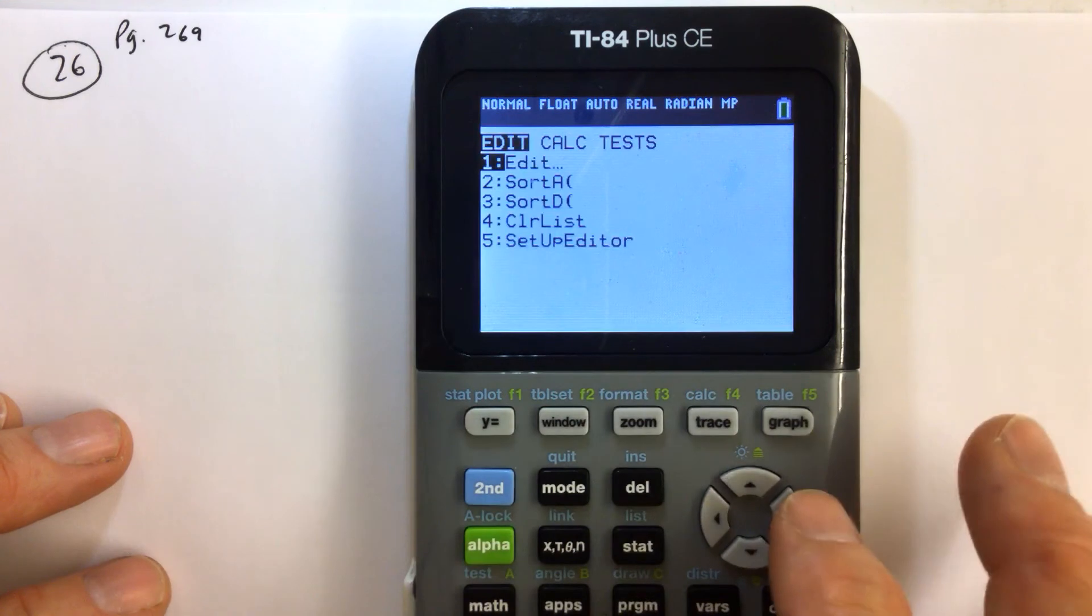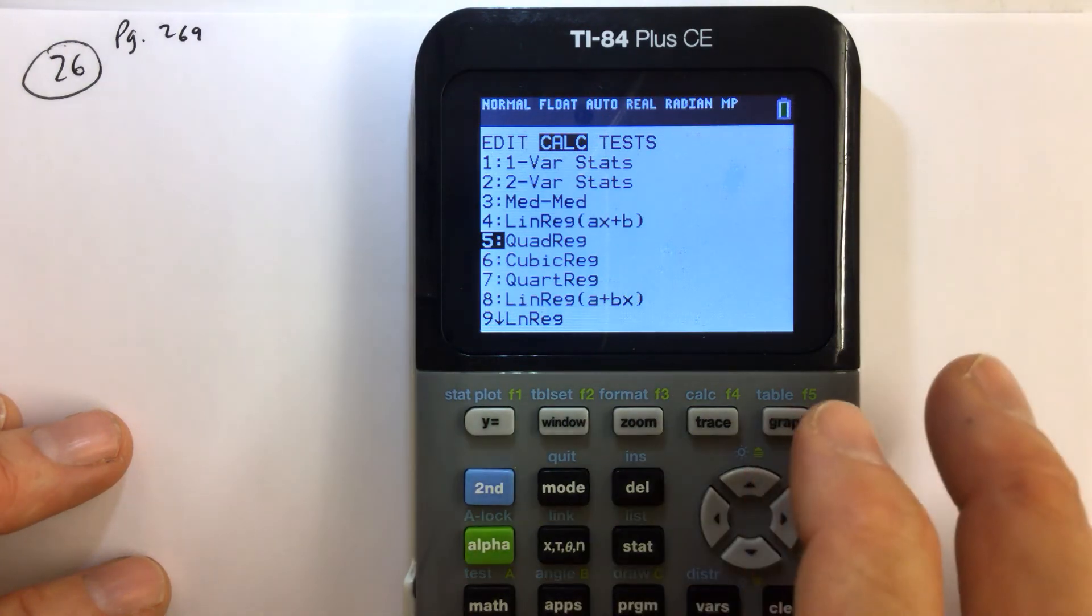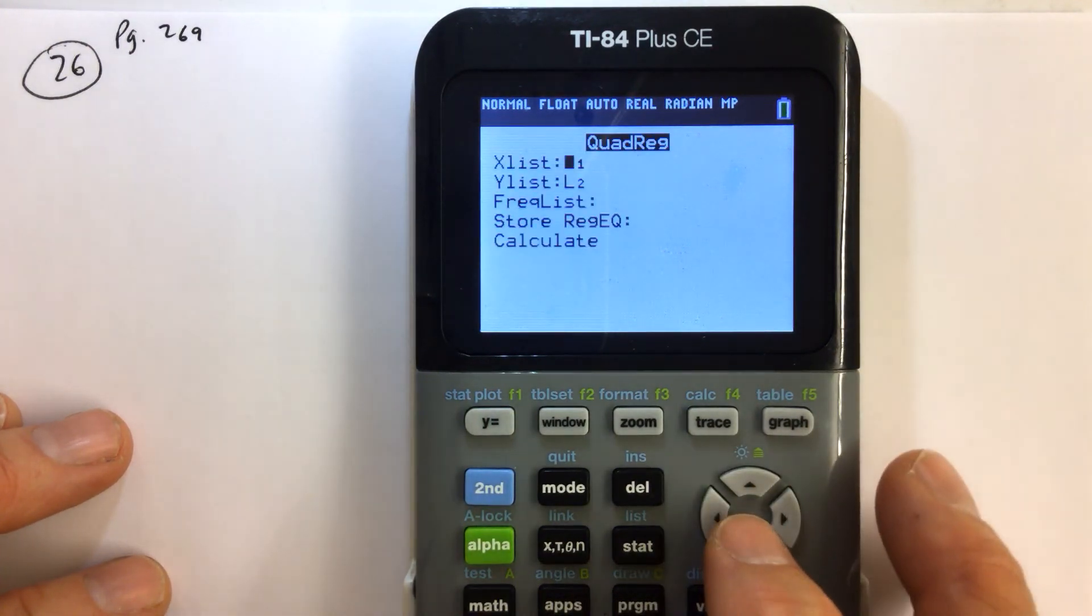So we hit stat, right arrow for calc, and then quadratic model, that's quadreg for quadratic regression model. And once we highlight that or just hit stat calc 5, we highlight and hit enter.